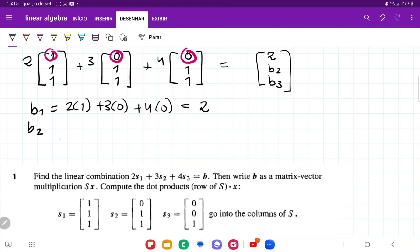Now let's find b2. b2 is going to be the second element scaled by 2, so 2 times 1 plus the second element. This should be 0 here. I wrote that wrong.